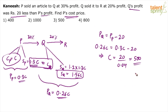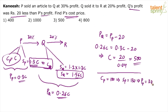For example, assume cost price of P is 100. Then selling price of P is 130, and profit of P is 30. Cost price of Q is 130, selling price of Q is 156, so profit of Q is 26. The difference in profits is 4 rupees.